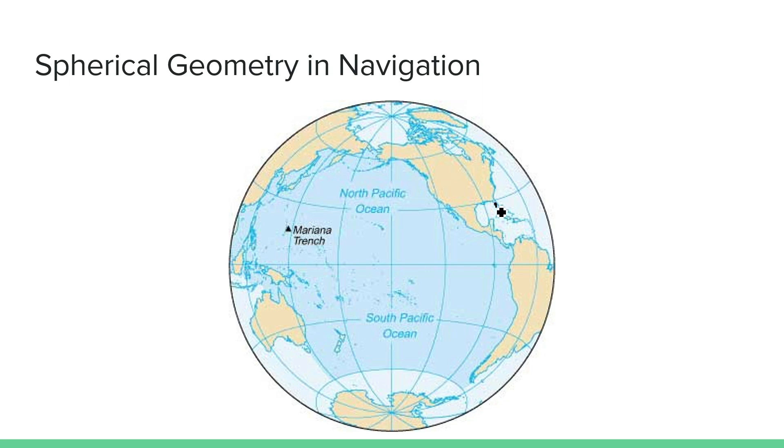So imagine you are taking a plane from Florida to the Philippines. Your first instinct might be to draw a line directly from Boca Raton to Manila. However, the flight path that planes actually take goes over Alaska in the process. This is because the great circle that connects Boca Raton and Manila passes through Anchorage as well.